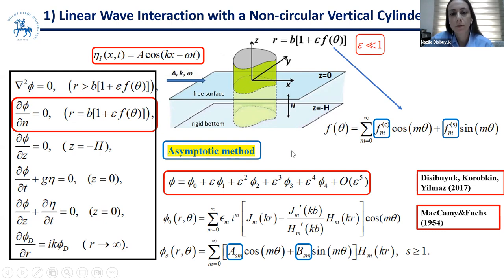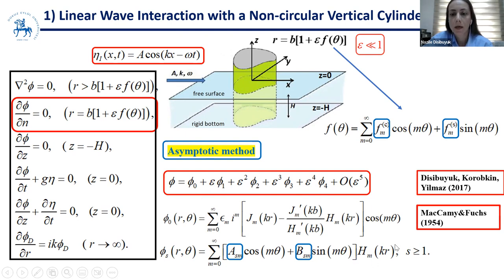This asymptotic method was proposed by Professor Korovkin. We expand the velocity potential phi using the small parameter epsilon asymptotically. At each order of the asymptotic expansion, the velocity potentials are given by clear series. The leading-order velocity potential corresponds to the solution for a circular cylinder, which is the well-known solution by MacCamy and Fuchs. The higher-order velocity potentials are given by series corresponding to diffracted wave potentials given by Hankel functions of the first kind.